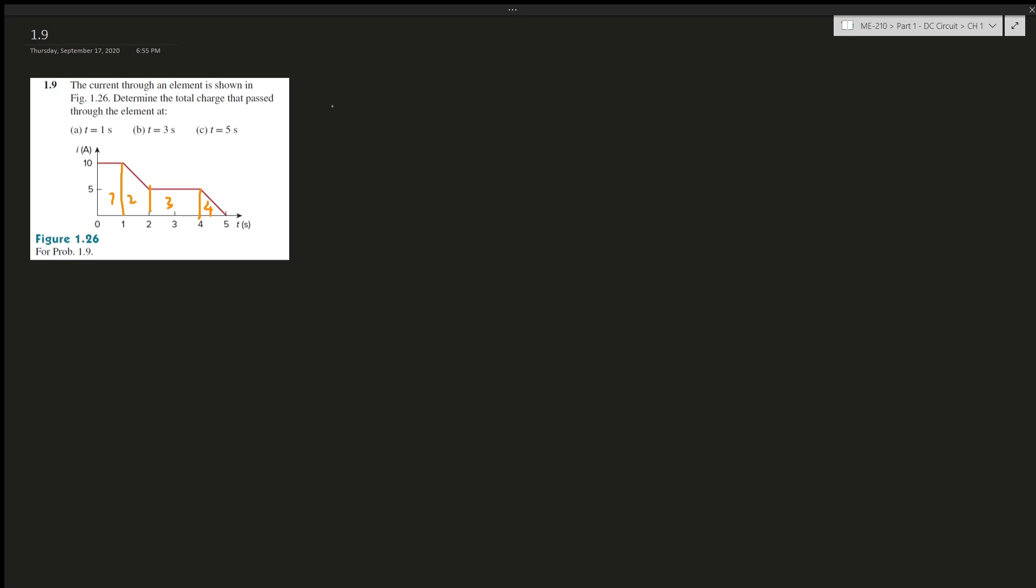Alright, question 1.9 says the current through an element is drawn in a figure and determine the total charges that pass through at 1, 3, and 5 seconds. I won't spend a tremendous amount of time drawing a pretty graph.